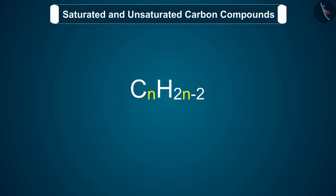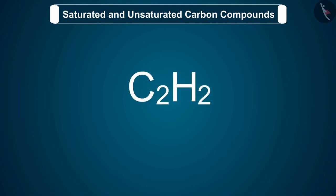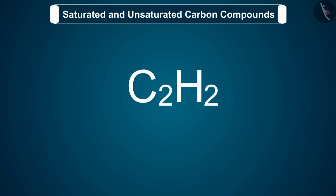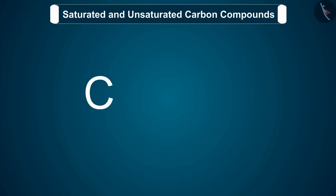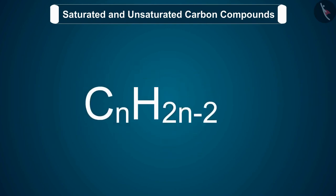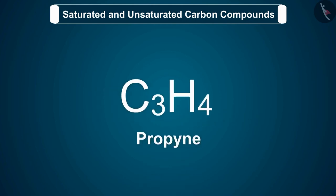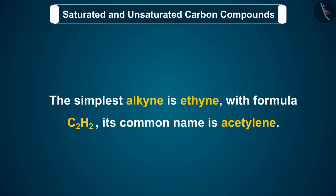Let us discuss this with the help of examples. If an alkyne has two carbon atoms in its molecule, then n equals 2. Its formula will be C2H2, which is ethyne. Similarly, if we take n equal to 3, we will get propyne. The simplest alkyne is ethyne, with formula C2H2, and its common name is acetylene.